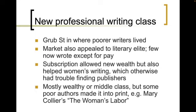We are also starting to see a more educated class where there will be more writers, and there's a new professional writing class being formed. Now one of the places we see in London is called Grub Street, where poor writers live and work with one another. The market is also going to appeal to a literary elite. Few now write except for pay — they're not writing anymore for some great duke or earl as their patron; now they're actually writing on their own. Subscription publishing would also allow for new wealth and helps women's writing, which otherwise had trouble finding publishers. Most writers are still mostly wealthy or middle class because of the education involved, but some poor authors do make it into print — for example, Mary Collier's The Woman's Labour.